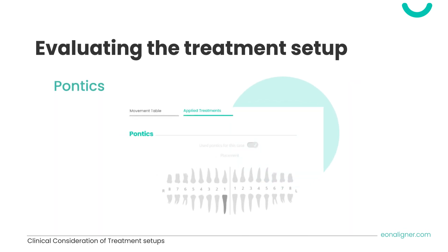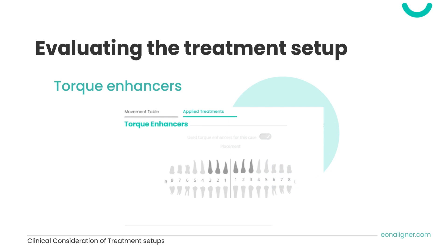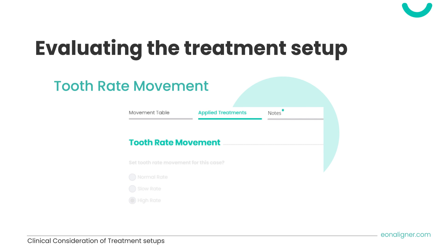When a pontic is requested, ensure it is applied for the correct tooth — it will appear in a different color. Torque enhancers are placed only on anterior teeth, either to preserve their buccolingual inclination during retraction or to change it when needed. The rate of movement is applied depending on case type, movements, and periodontal status — for example, a slow rate for compromised periodontal conditions or a high rate when the number of aligners is limited. The rate — normal, slow, or high — is determined by EON's treatment planning team and appears in the applied treatments section.